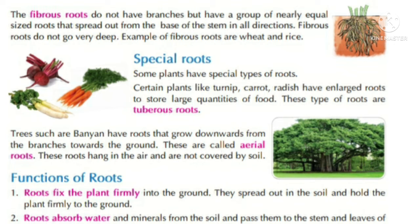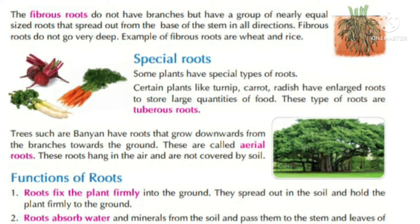Now special roots. Some plants have special types of roots. Certain plants like turnip, carrot, radish have enlarged roots to store large quantities of food. These type of roots are called tuberous roots.